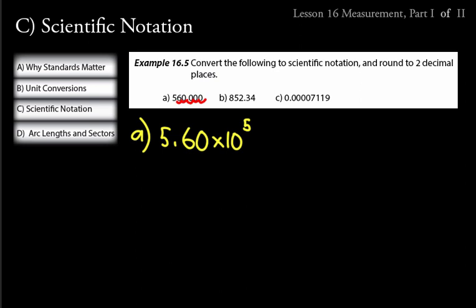We moved the decimal five places to the left, so we get 10 to the fifth — which is one hundred thousand. We're saying 5.6 times one hundred thousand. Scientific notation is really meant for much larger and much smaller numbers than this — we're just practicing the conversion here.